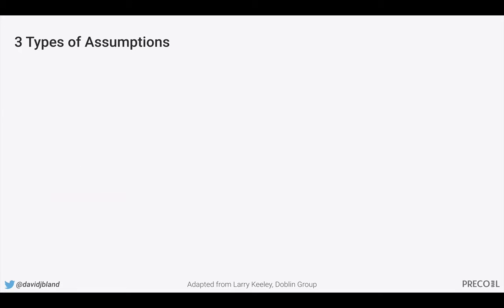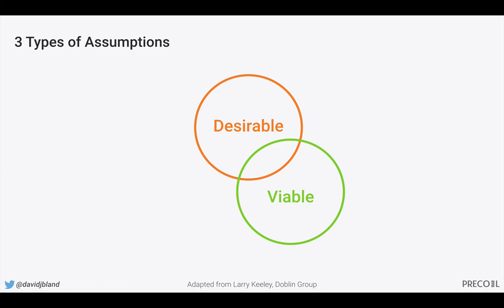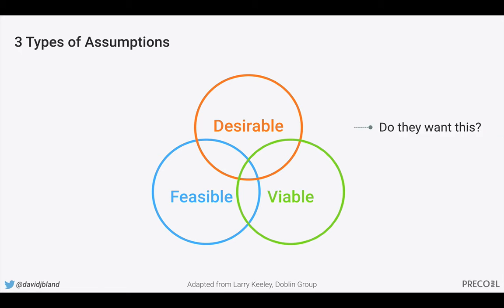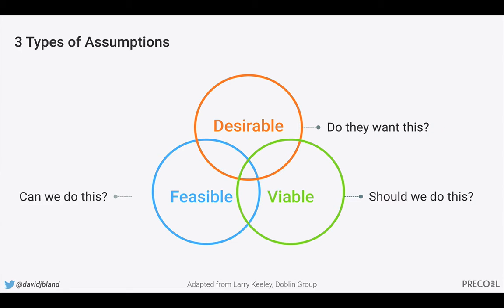There are three types of assumptions I normally see in new product development: desirable, viable, and feasible. Desirable being, do they want this? Viable being, should we do this? And feasible being, can we do this?